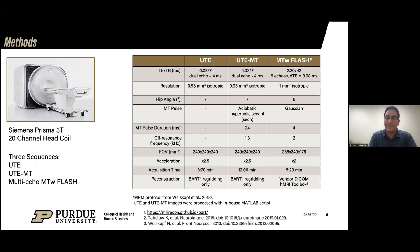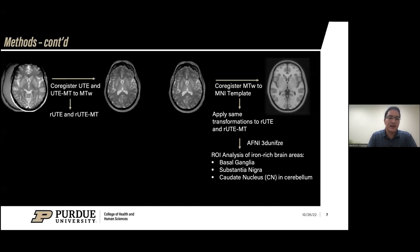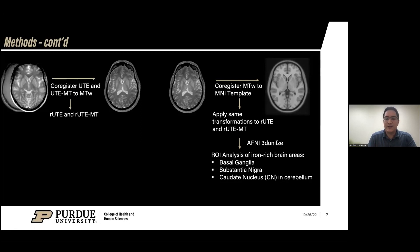Once we got our images, we co-registered the UTE images to the MT-weighted vendor sequence, then co-registered the MT-weighted image to the MNI template and applied the same transformations to the other UTE images. We used AFNI's 3dUnifize to normalize everything to the white matter. We performed an ROI analysis of iron-rich brain areas such as the basal ganglia — the putamen, caudate nucleus, globus pallidus, substantia nigra — and the dentate nucleus in the cerebellum.